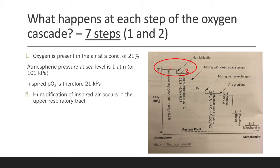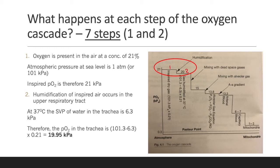Secondly, humidification of inspired air occurs in the upper respiratory tract. At 37 degrees Celsius, the saturated vapour pressure of water in the trachea is 6.3 kPa. Therefore, the PO2 in the trachea is 101 minus 6.3, multiplied by 0.21. We therefore come to a value of 19.95 kPa — this is the partial pressure of oxygen in the trachea.